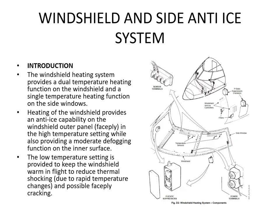Moving on to windscreen and side screen heating: there's a dual temperature heating system on the main windscreens and a single temperature heating function on the side screens - two temperature settings for the main screens, one for the side screens. Heating the windscreen provides an anti-ice capability on the outer panel face ply in the high temperature setting, while providing moderate defogging in low setting. The low temperature setting keeps the windscreen warm in flight to reduce thermal shock from rapid temperature changes and possible face ply cracking. The windscreen heating system is normally switched on in at least low mode regardless of ambient conditions.